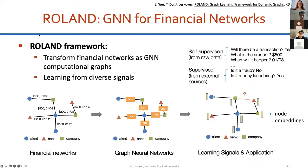We propose Roland as a GNN framework for financial networks. The key idea is to transform financial networks — among clients, banks, and companies, where each edge defines a transaction — into a GNN computational graph by defining a small neural network (a GNN layer) for each edge, allowing information to propagate among entities. The system learns through diverse signals: self-supervised objectives like predicting whether a transaction will occur, its amount, or timing; and supervised objectives like detecting fraud or money laundering. This framework enables learning from financial networks for many downstream applications.